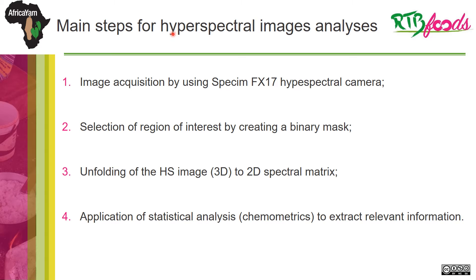The main steps for hyperspectral image analysis are: first, image acquisition using a hyperspectral camera; second, the selection of regions of interest by creating a binary mask; third, unfolding of the hyperspectral image from 3D to 2D spectral matrix; and last, application of statistical analysis like chemometrics methods to extract relevant information from the data.